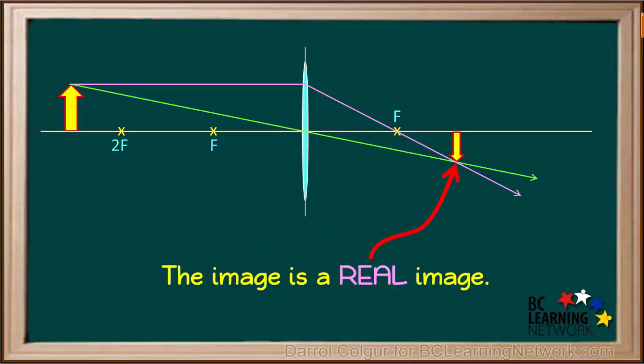The image in this case is a real image because it appears where light rays actually cross each other. If the sensor of a digital camera was placed here, the image would be recorded.